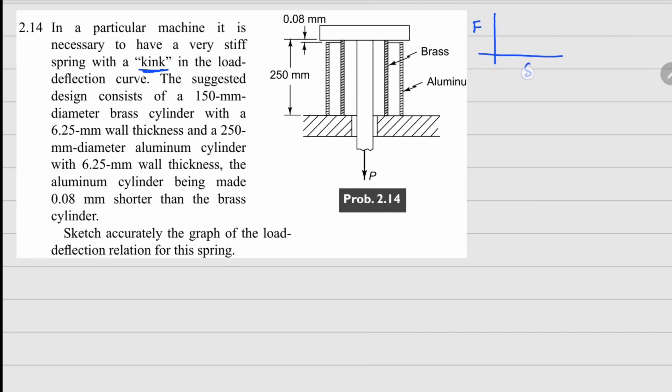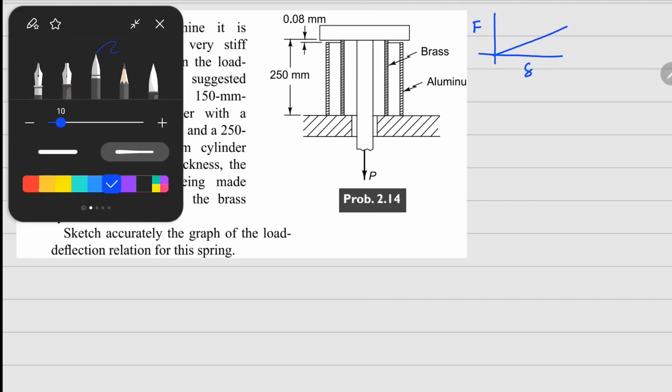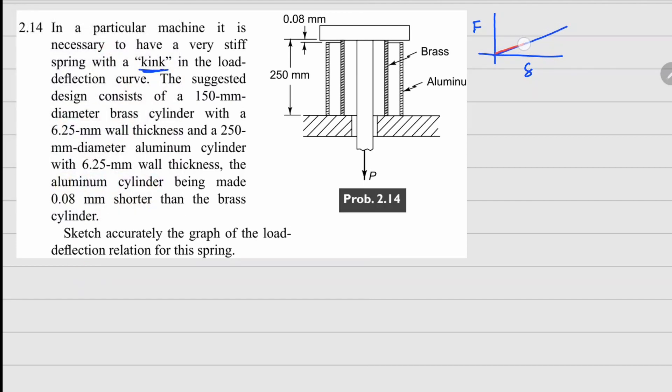If a spring has a kink that means initially it will follow this curve here, but later on it's going to go on a different line so that this corner, this is your kink there.